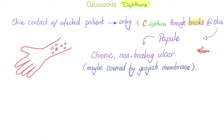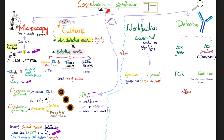The peculiar thing about pseudomembranous pharyngitis caused by diphtheria is that if you try to remove it, it bleeds. Now let's diagnose Corynebacterium diphtheriae. By microscopy, we have gram-positive pleomorphic rods. They resemble Chinese letters under the microscope. If you want to see the metachromatic granules, use methylene blue or aniline dyes.